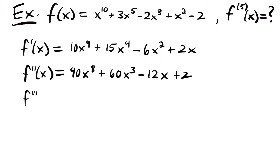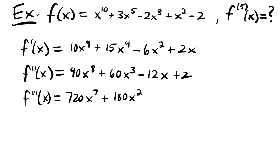Now we have to find the third derivative. f triple prime of x is equal to 8 times 90, which is 720, times x to the seventh power, plus 60 times 3, which is 180, times x squared. Then we have minus 12, because the derivative of negative 12x is just negative 12 — the coefficient of that variable to the first power. The derivative of 2 is 0, so we don't need to write that. And so now we have our third derivative.